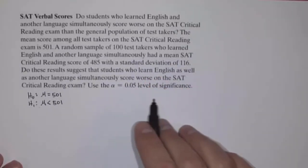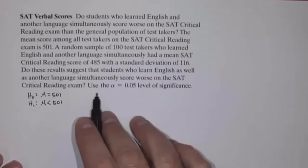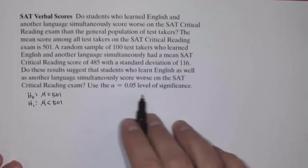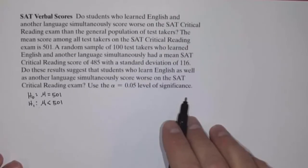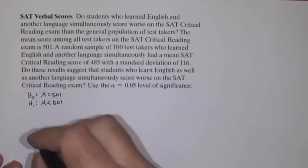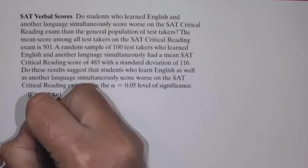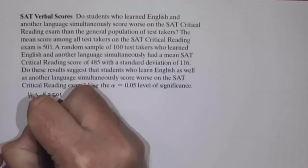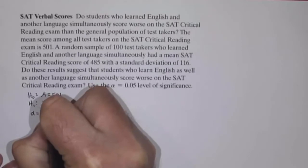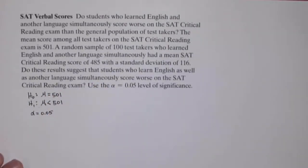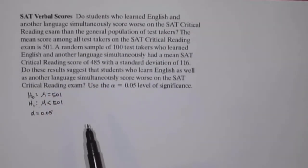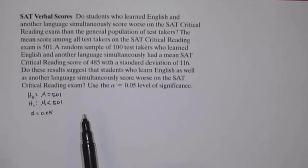Next we need to choose a level of significance. The problem tells us to use a 0.05 level of significance, so alpha equals 0.05. We can do either the classical approach or the p-value approach — I'm going to show both.